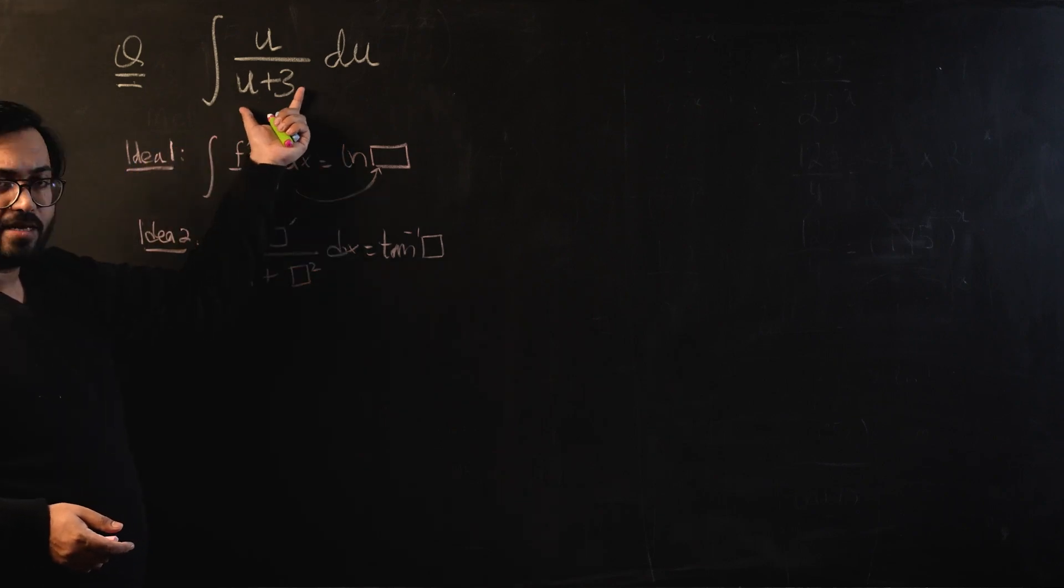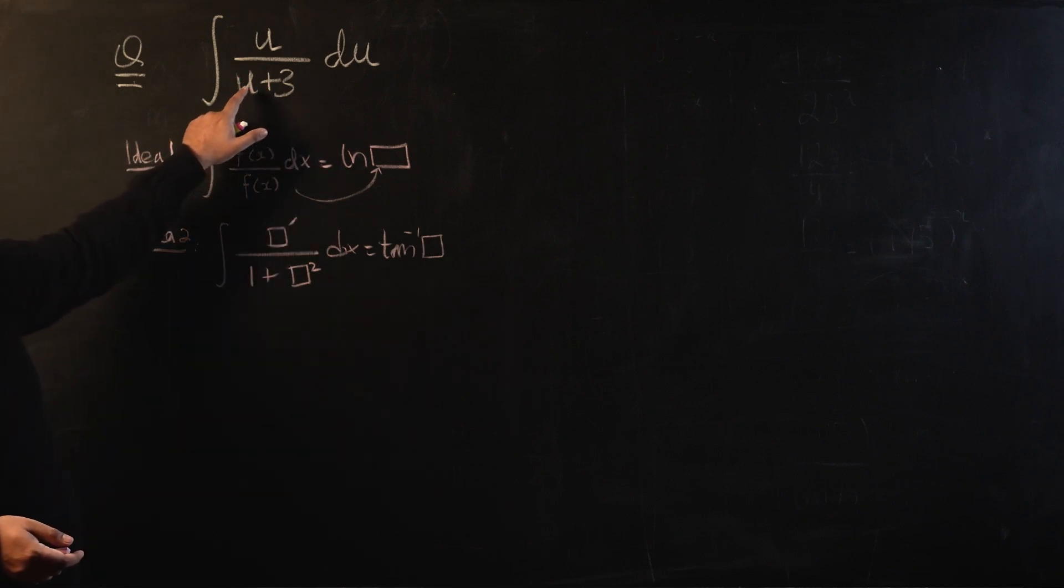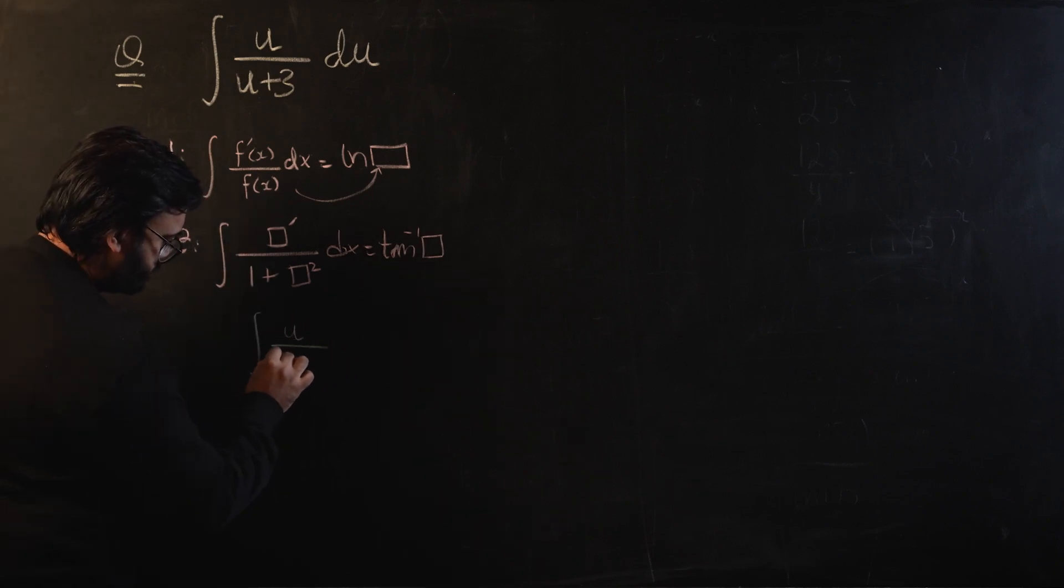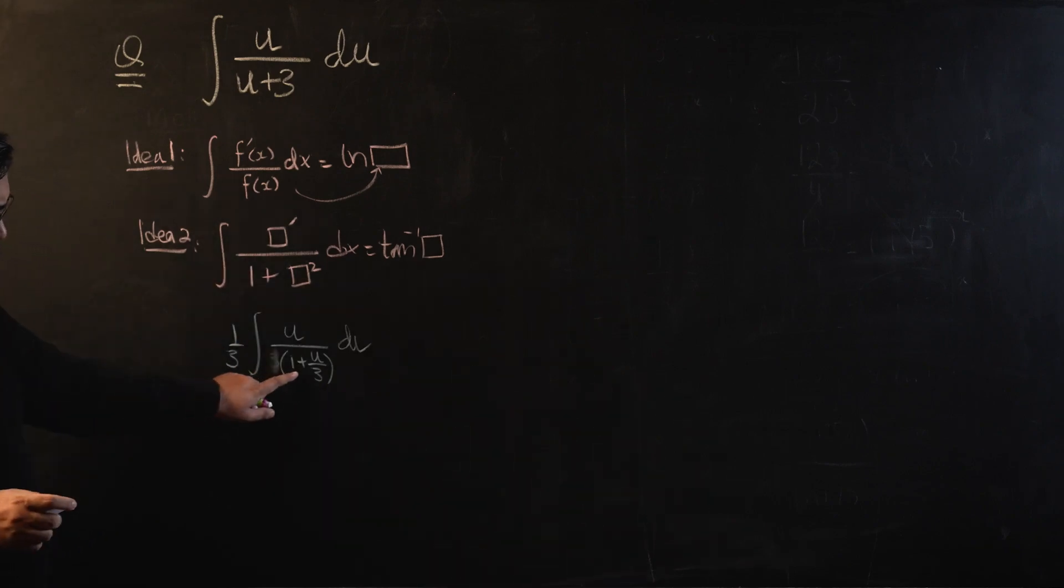Let me help you think a little bit over here. If you take 3 common, I will be left with 1 + u/3 in the denominator. Even if I try to make that 1/3 work, let me just show you in a couple of steps.